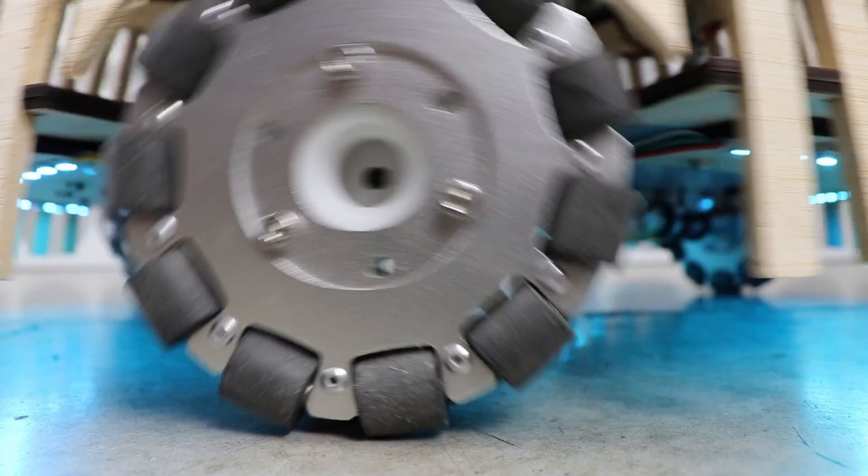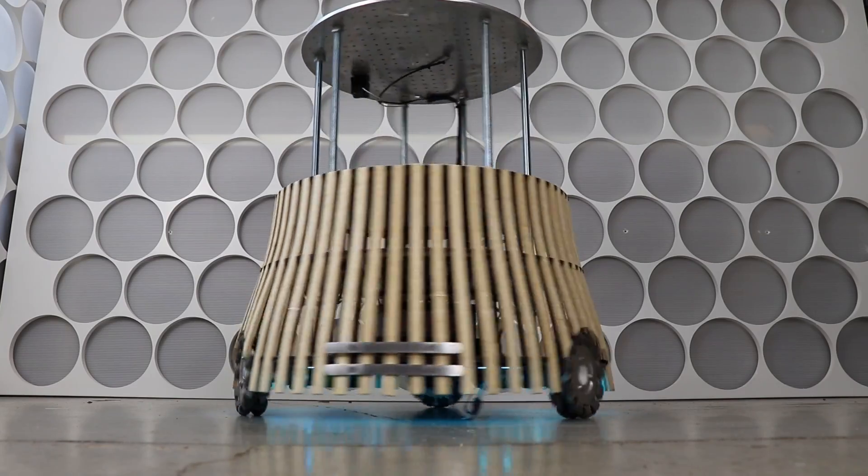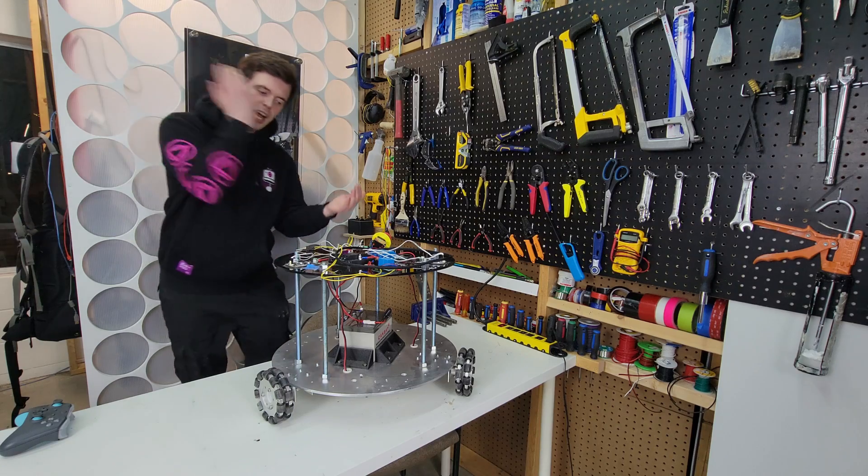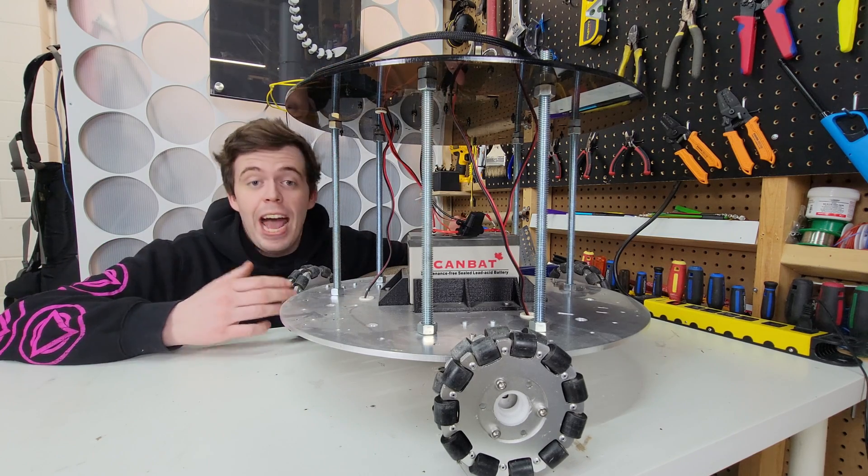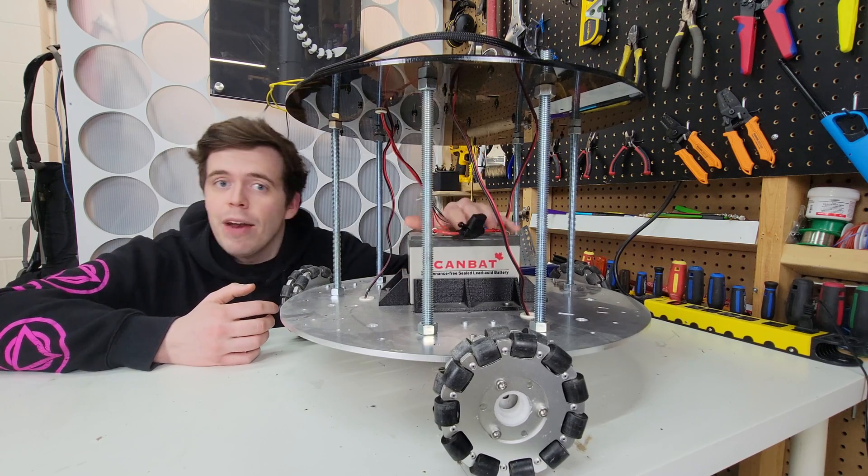Have you ever wondered how to shut down your pet robot after it gains sentience? The obvious answer is to cut the power cable. But what if your robot doesn't have a power cable? What if it's battery operated?